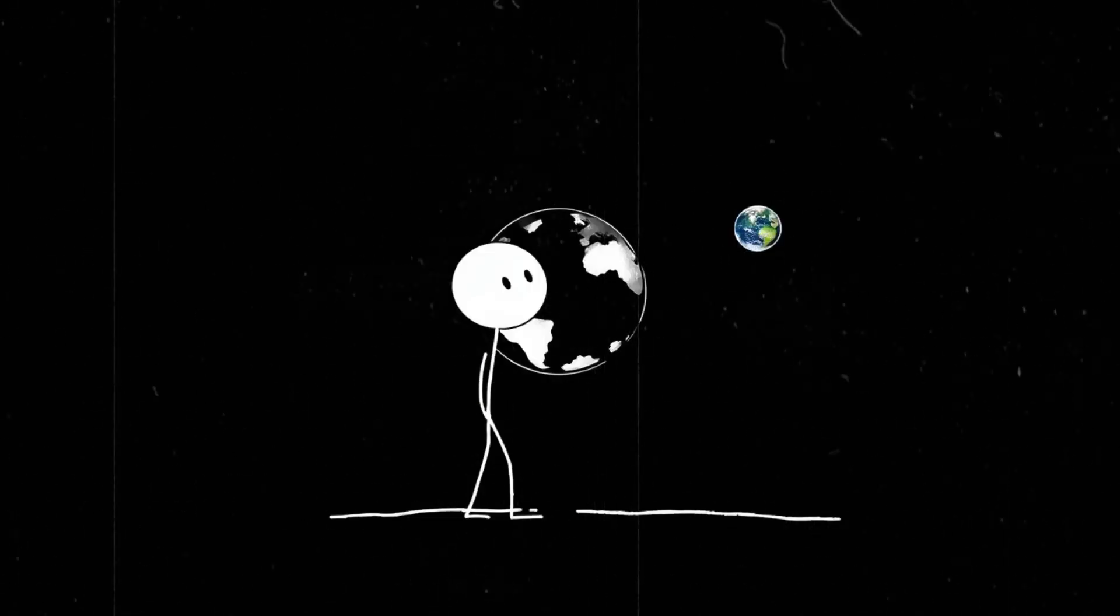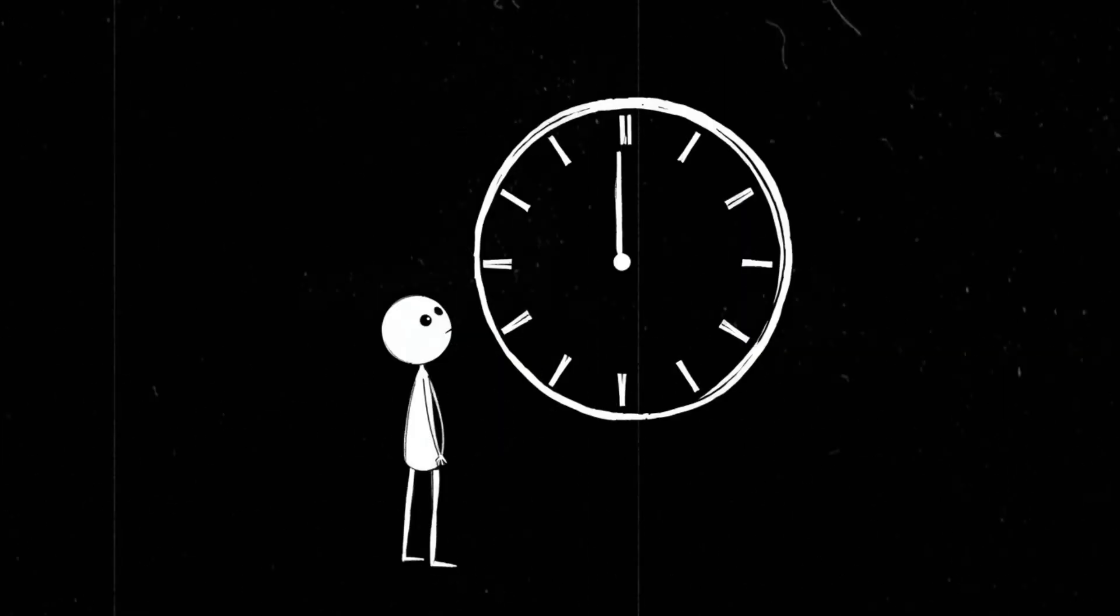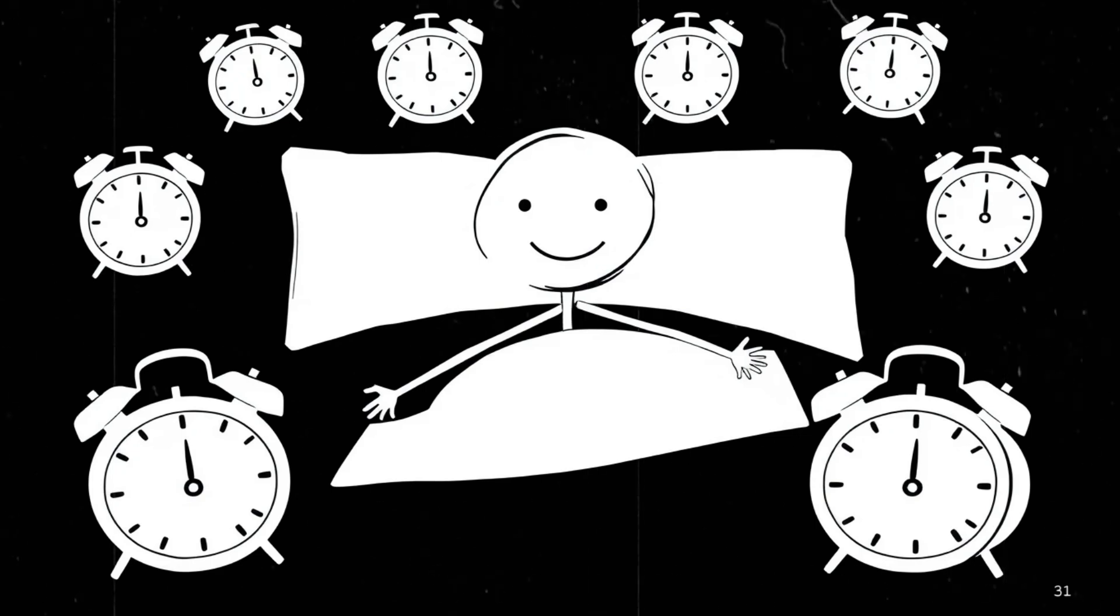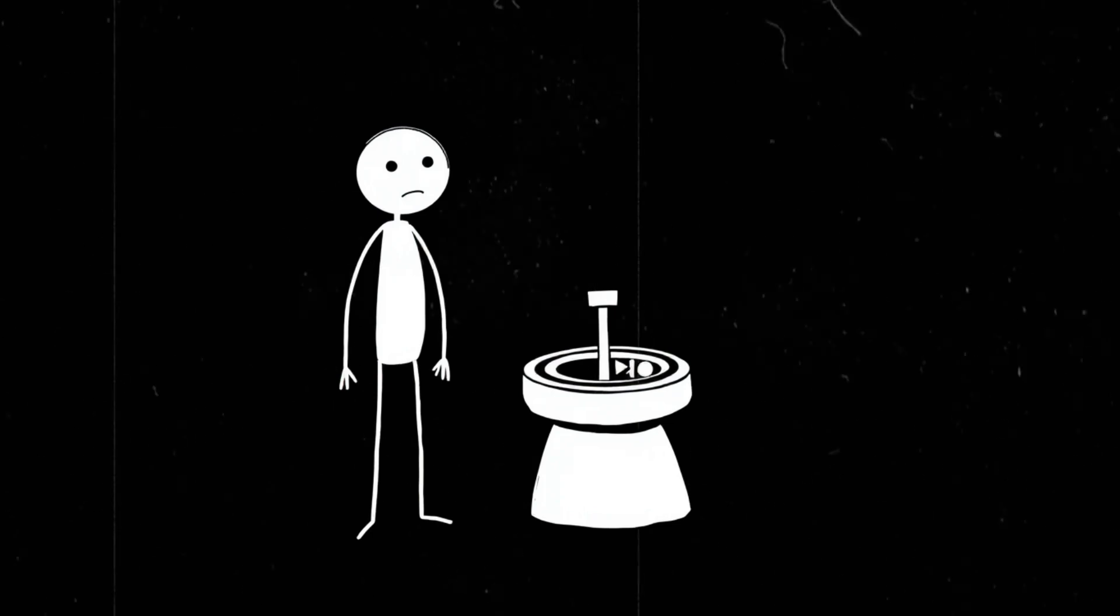But with two moons? Double the gravitational tug means double the slowdown. Over time, Earth's rotation would stretch out even more. Our 24-hour day could become 30 hours long. Maybe even more. Which, depending on how much you like sleeping in, might sound like a bonus. But for ancient life, this could have changed everything.